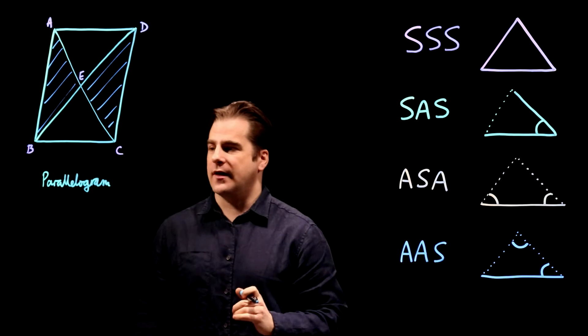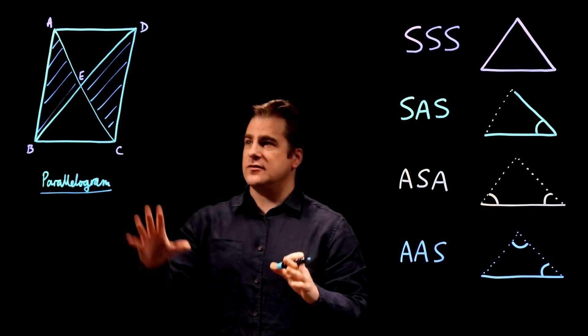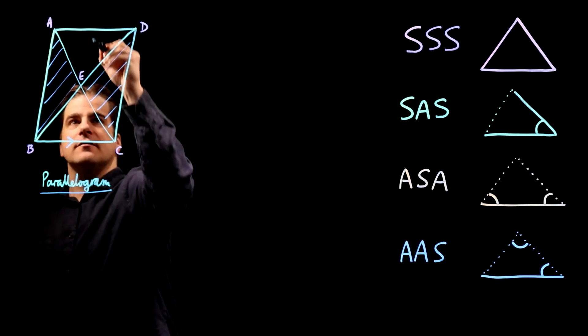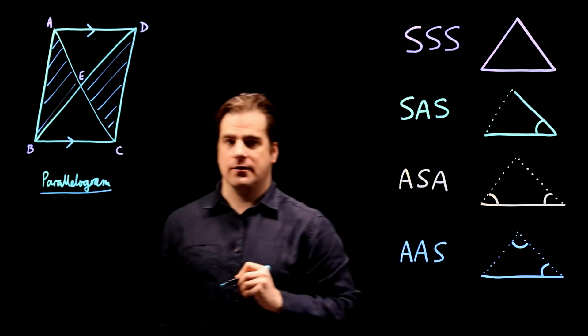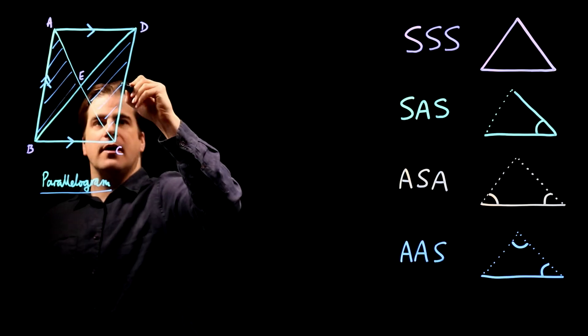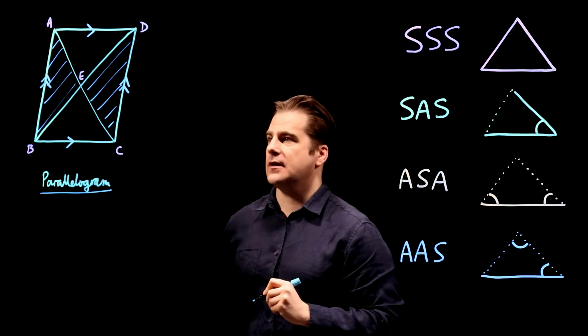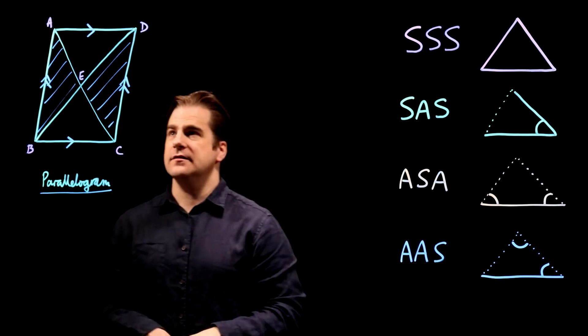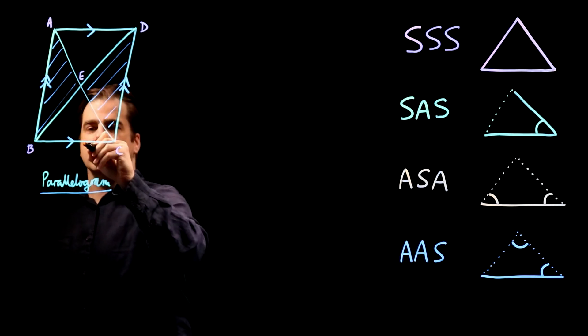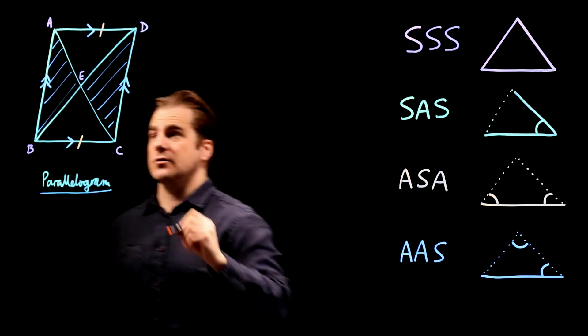How do we do this? Well, we're told it's a parallelogram, which means we can add information to this diagram. It means that that side is parallel to that side, and that this side is parallel to that side. It also means, let's have a change of color, that this side is the same length as that side.